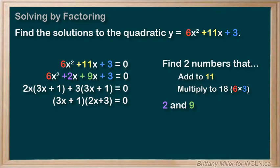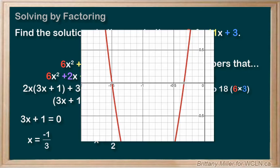For this to be true, either 3x plus 1 must equal 0 or 2x plus 3 must equal 0. We solve both of these separately and get x equals negative 1 third and x equals negative 3 halves. Let's look at the graph of this function. It seems like we're about right. Good.